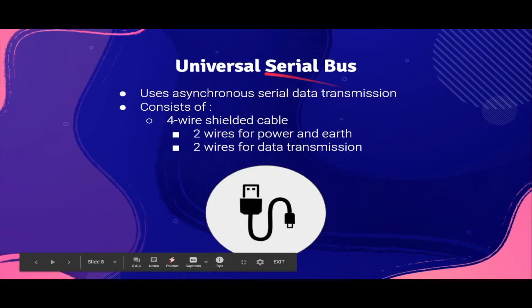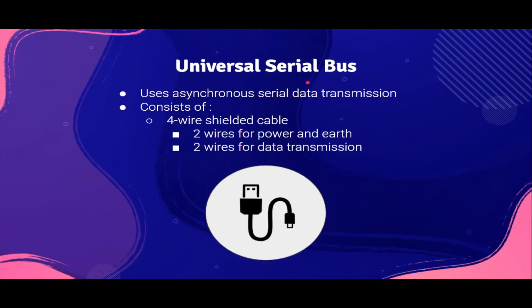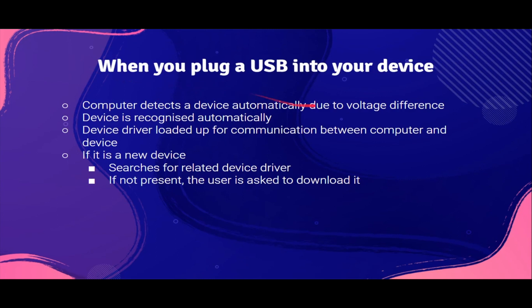Next, Universal Serial Bus, or USB. This uses asynchronous serial data transmission. It consists of four wire-related cables: two wires for power and earth, and two wires for data transmission. When you plug a USB device into your computer, the computer will detect the device automatically because there is a voltage difference, and then it recognizes the device automatically as well. The device driver for that particular device is loaded up so the communication between the computer and that device can begin.